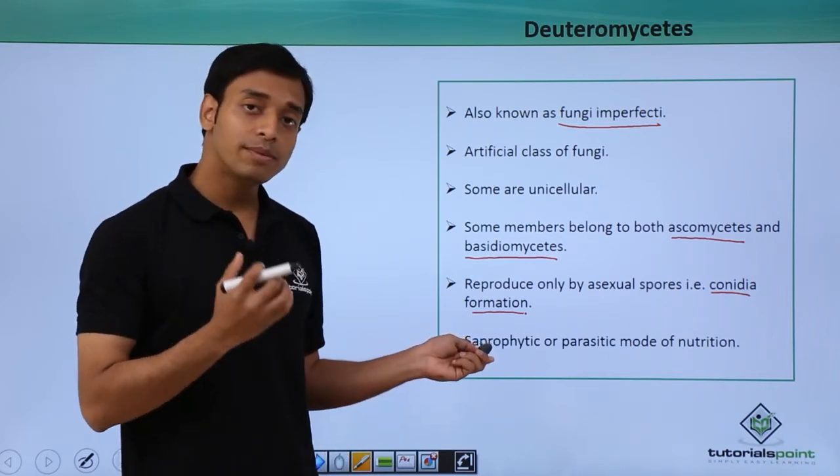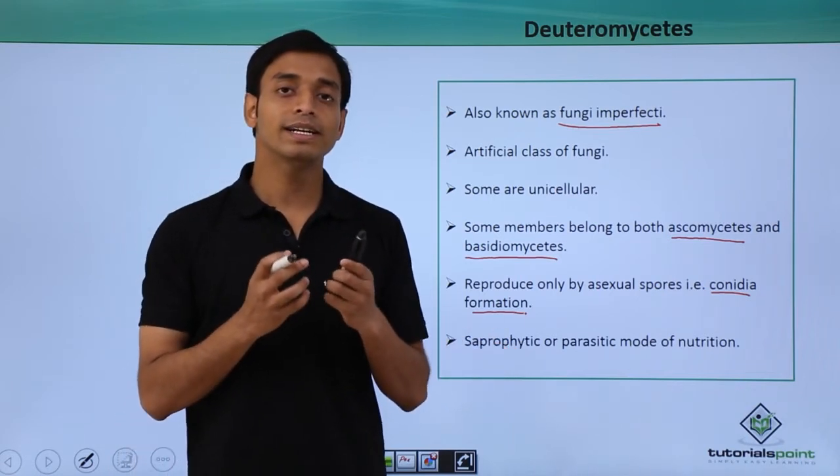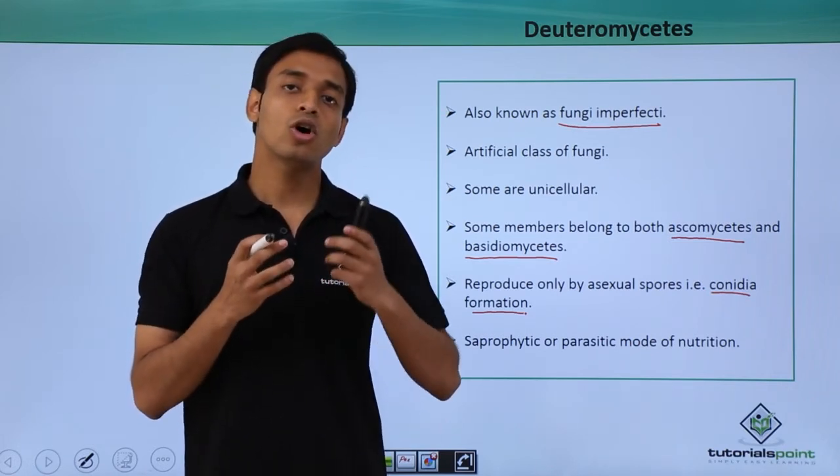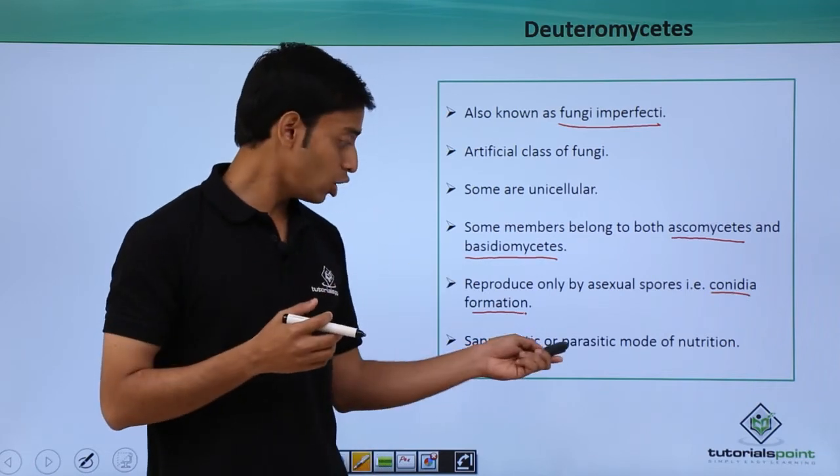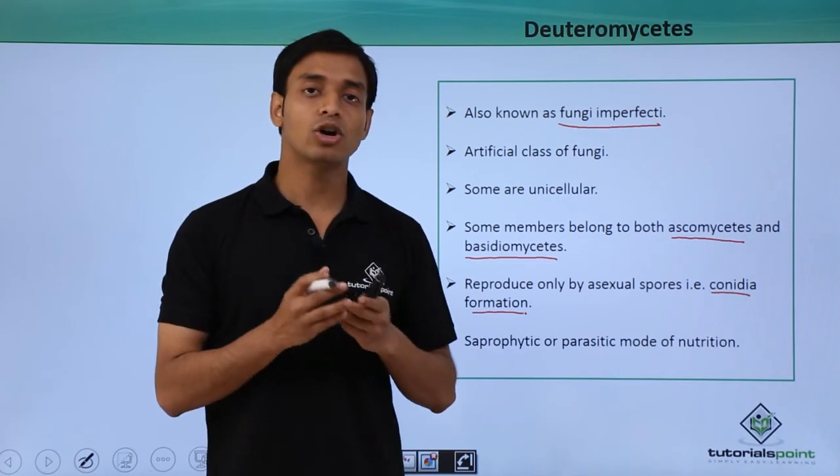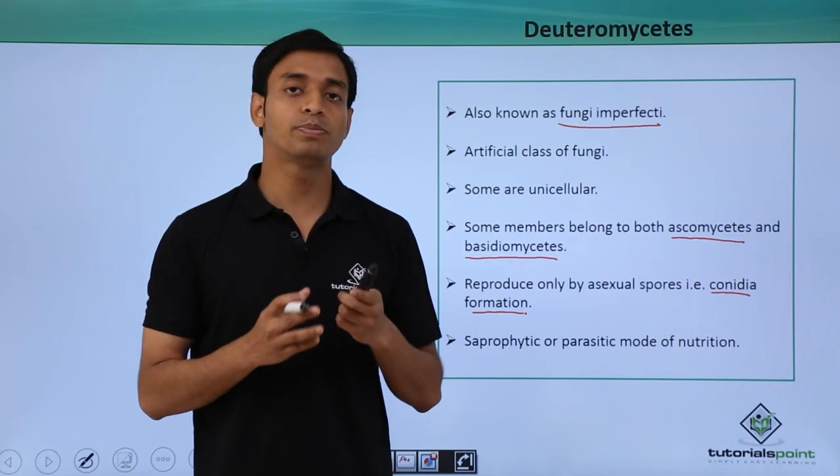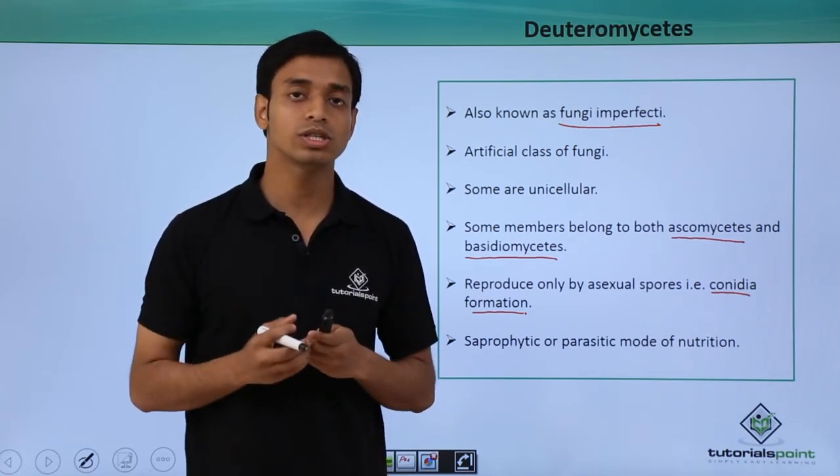The mode of nutrition is saprophytic, which means they can take in digested products from outside or depend on dead and decomposing organisms. They can also be parasitic, which means they depend on the host organism for nutrition and take in the food prepared by the host for their own survival.